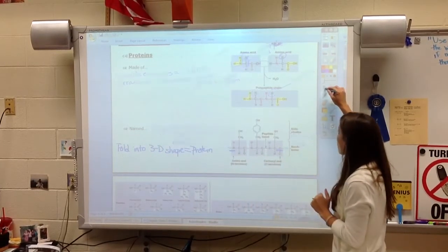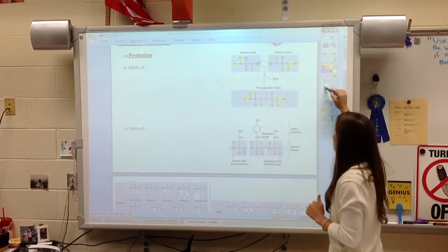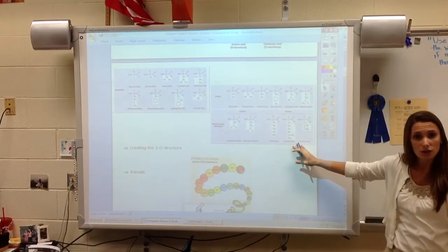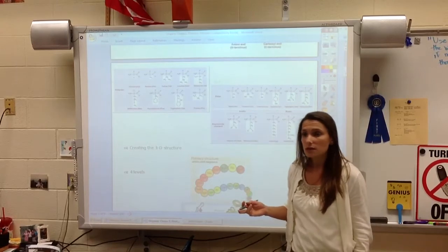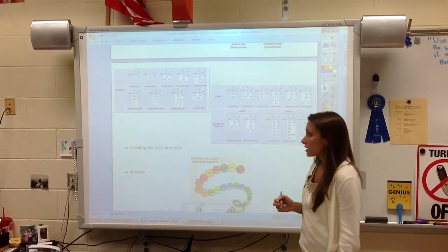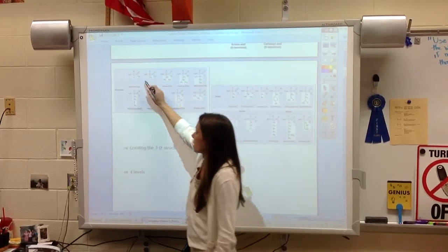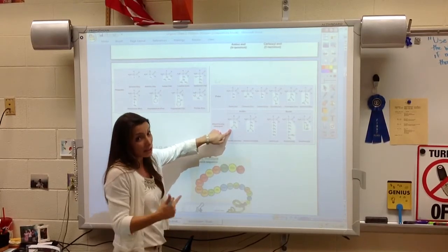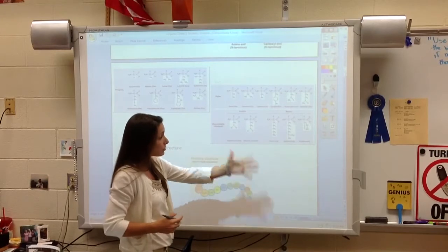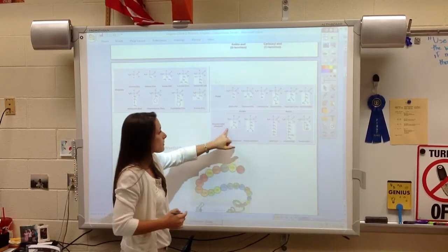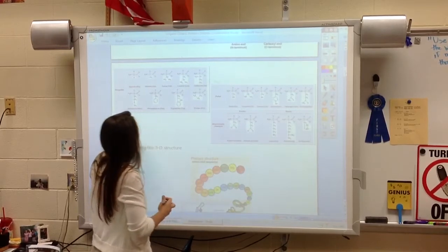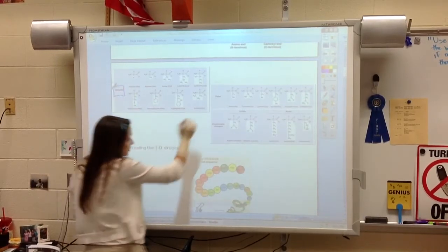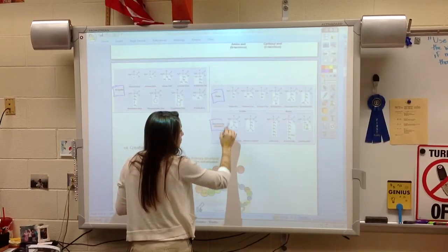Thankfully, you do not have to memorize any of these drawings as much as recognize them. But these are the 20 amino acids that are most common. There are actually some different ones. But these are the basic 20 amino acids. What we want to recognize is the same basic structure on all of them. We want to notice that some will be nonpolar, some will be polar, and some will be charged. You don't have to memorize which ones are which.